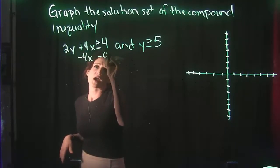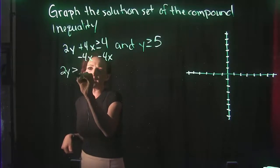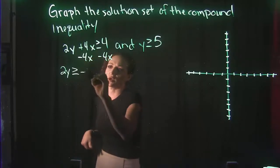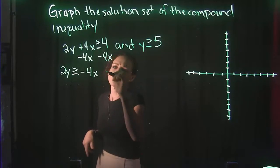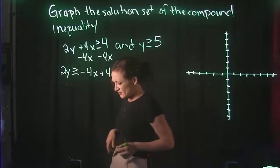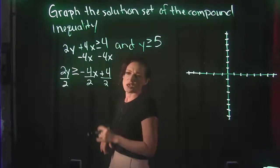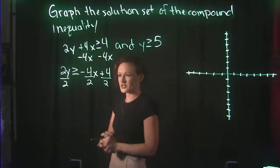So the first thing I'm going to do is subtract that 4x to the other side. So I'm going to drop down the 2y is greater than or equal to. I'm going to drop down that minus 4x and then plus 4. And all we have to do to get y by itself is to divide out the coefficient.